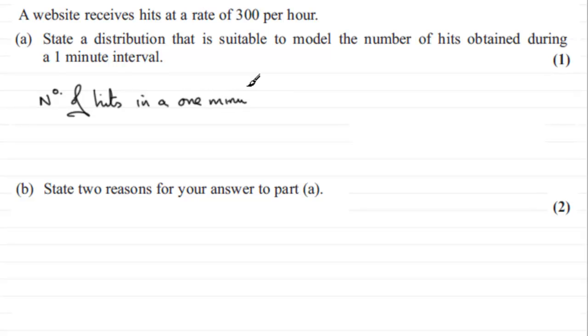Now obviously we don't know exactly how many hits we're going to get in a one minute interval, but this is the mean rate. And that would be equal to 300 divided by 60 minutes, giving us an answer of five. So we're expecting five hits in a one minute interval.